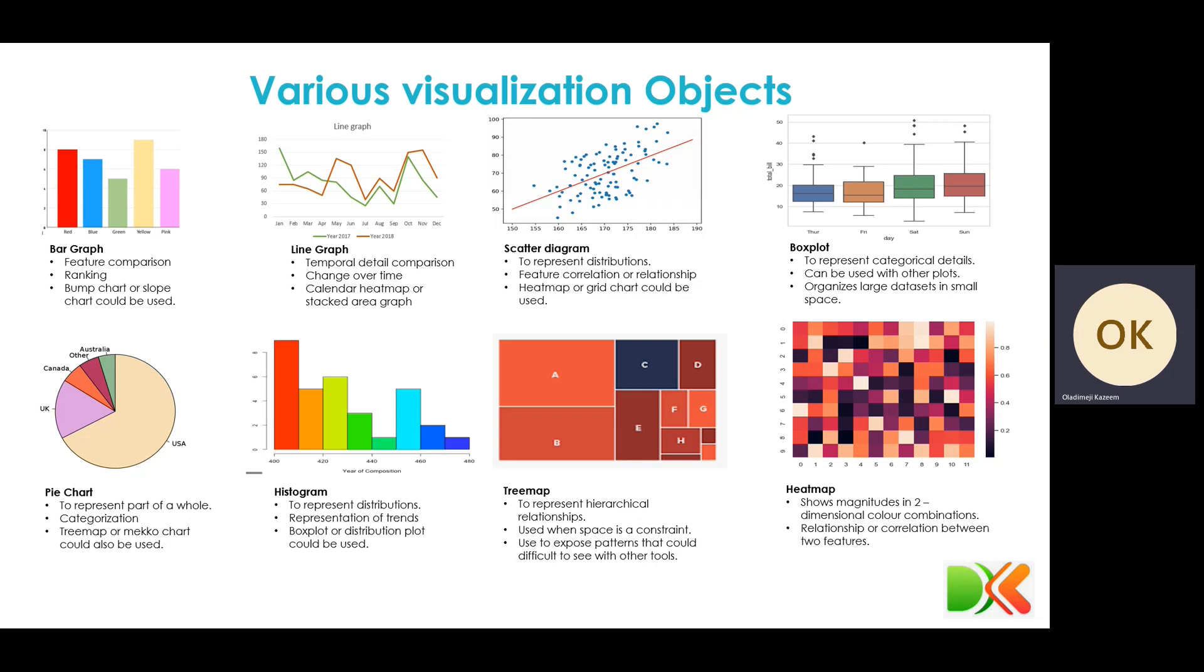Then we have the tree map. Tree map represents data using hierarchical relationship. And it is used when space is a constraint and you need to present so much. We use it to expose data patterns that can hardly be exposed by any other tool that we have mentioned.